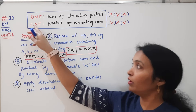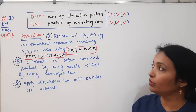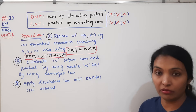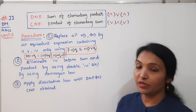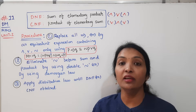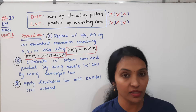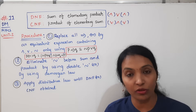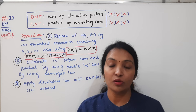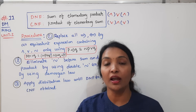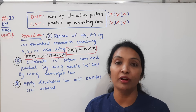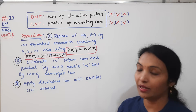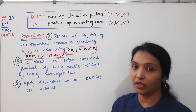Disjunctive Normal Form and Conjunctive Normal Form. If we use any logical expression, we can solve the equivalence from the truth table. However, if we use a standard form, we can use DNF or CNF.